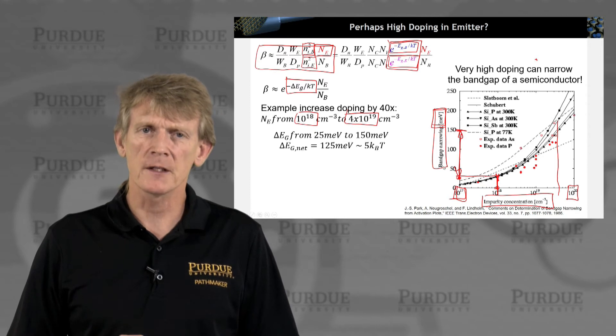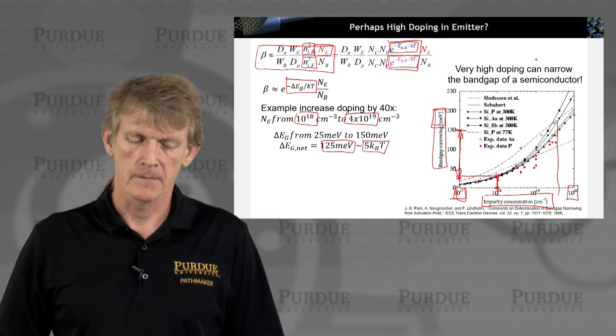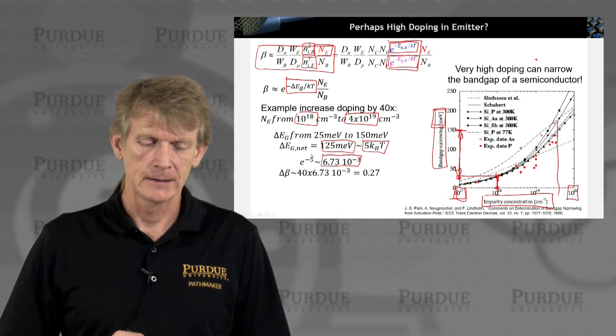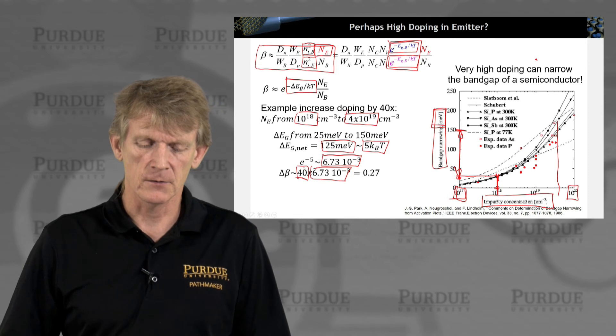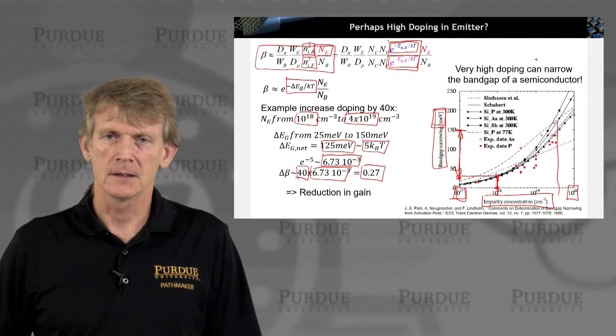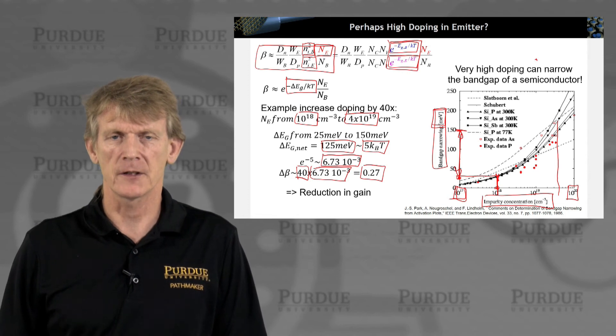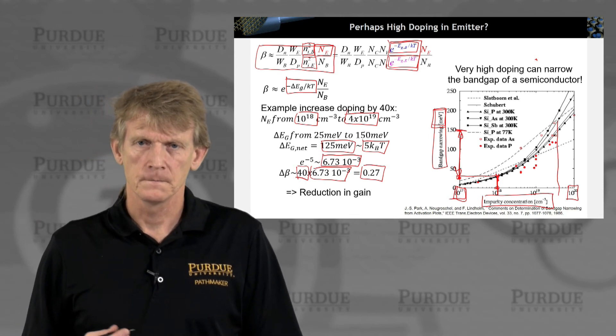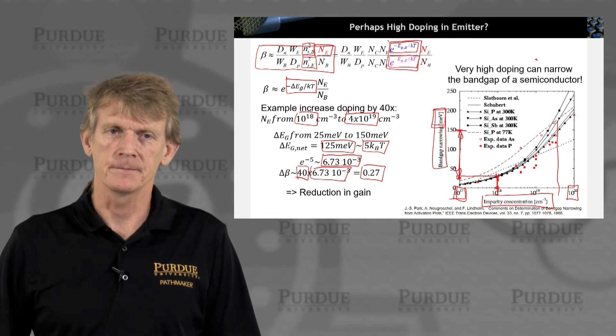So that means I'm going roughly from 25 millielectron volt band gap change to, let's call it 150. So that's a 125 millielectron volt change. That's roughly 5 kT ballpark. So 5 kT I put in the exponent, e to the minus 5 is 6.73 times 10 to the minus 3. I multiply my gain of 40 due to increasing NE with this 6.73 times 10 to the minus 3, I get 0.27. I actually reduced the gain. So you can walk through some numbers, but this second-order effect of modifying the band gap due to the doping destroyed the effect of trying to increase the gain by just the simple expression that we had before. So doping can change band gap. Band gap can immediately change the gain as well.